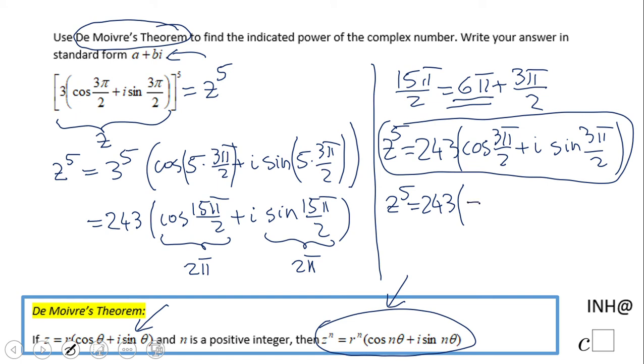Plus i sine of 3π over 2, this is negative 1. So we end up here with z to the fifth power equals 243 times zero, that is zero, and this one becomes negative i times 243.